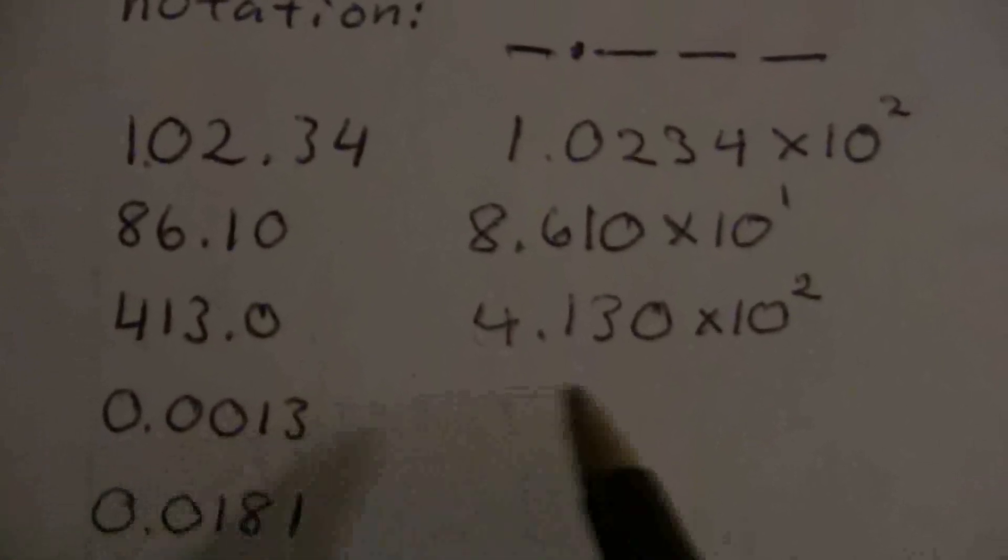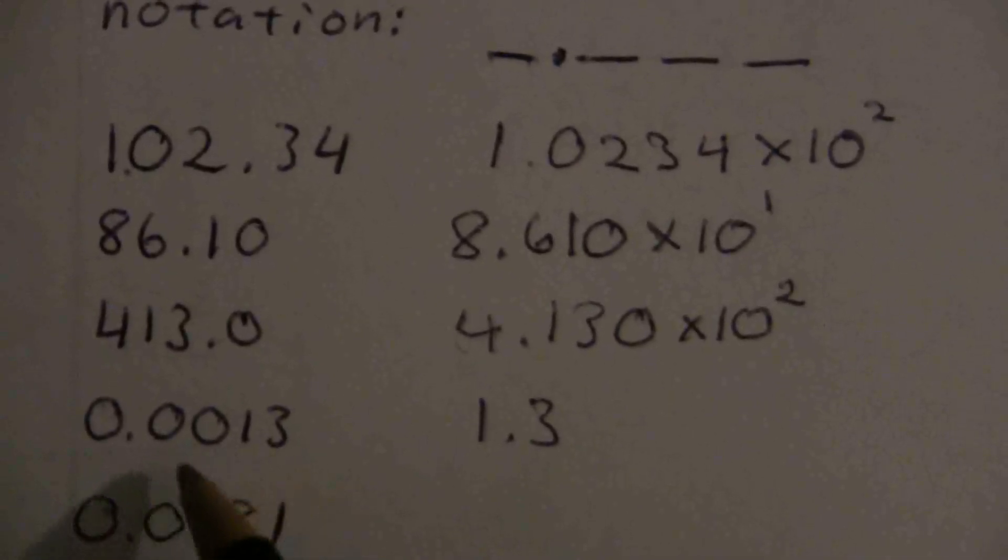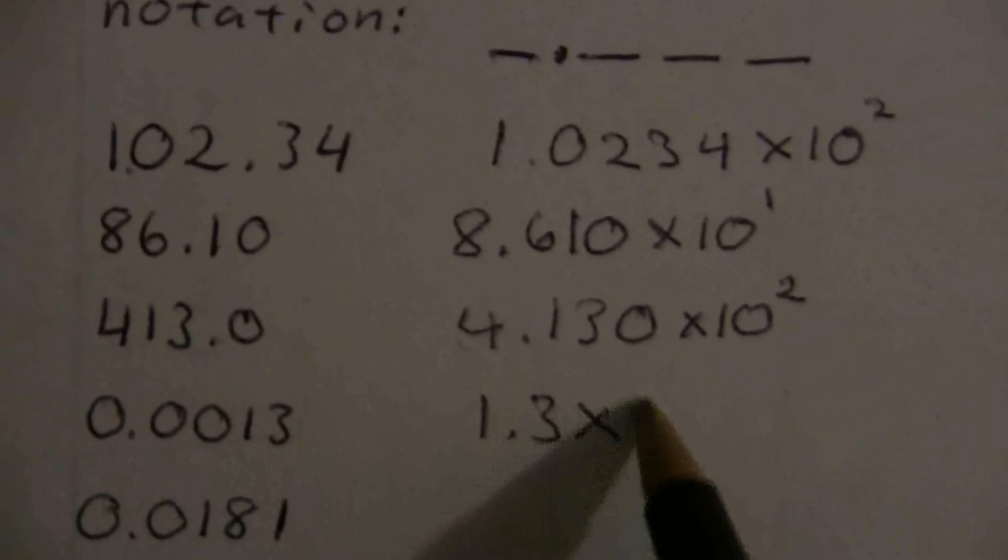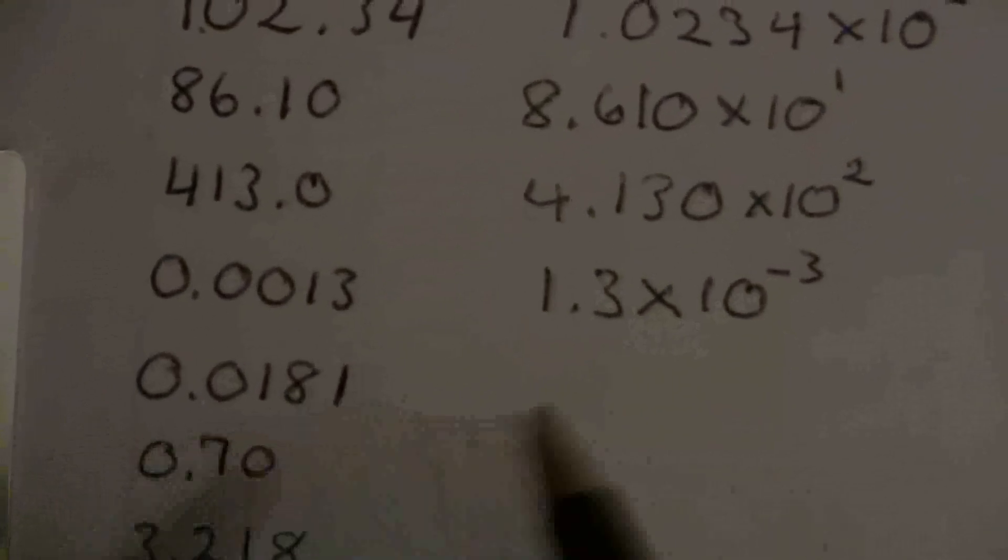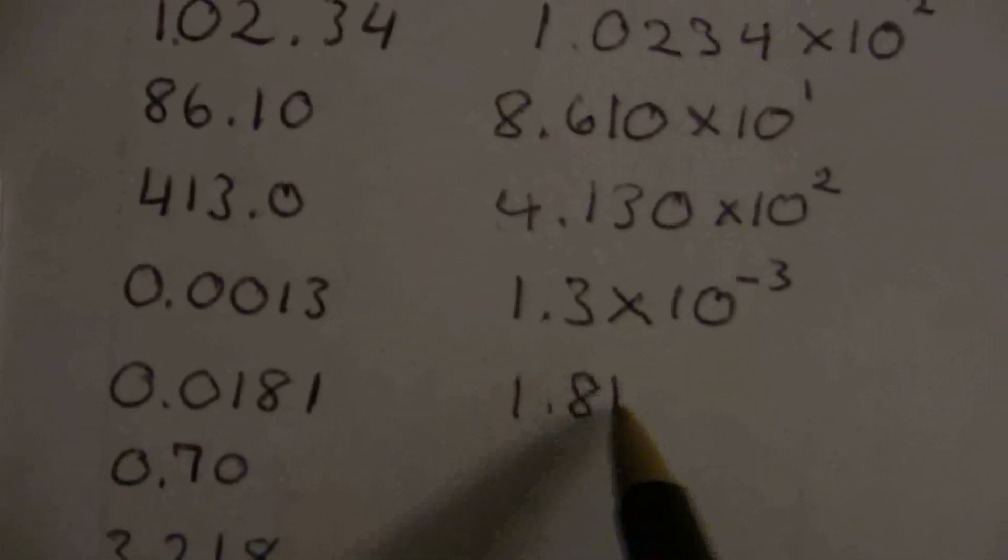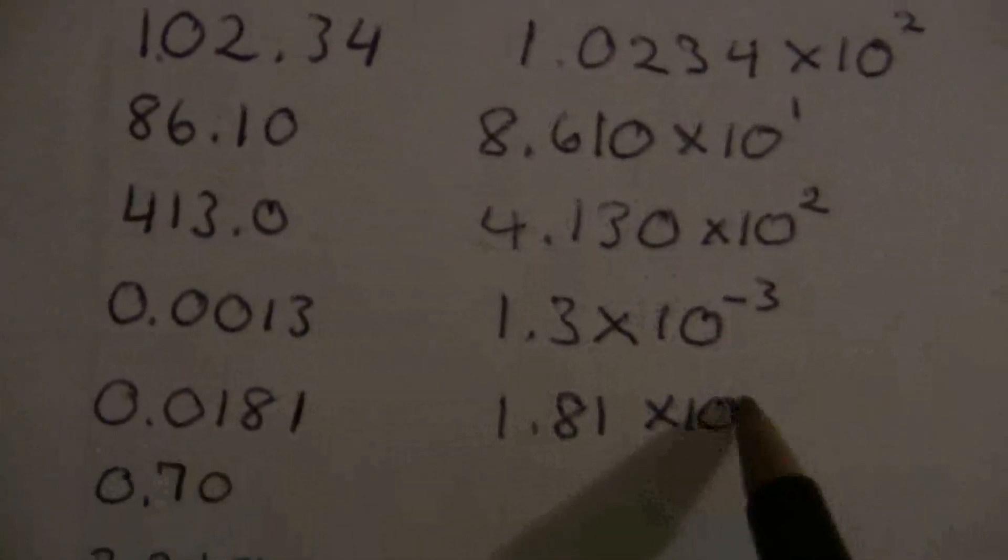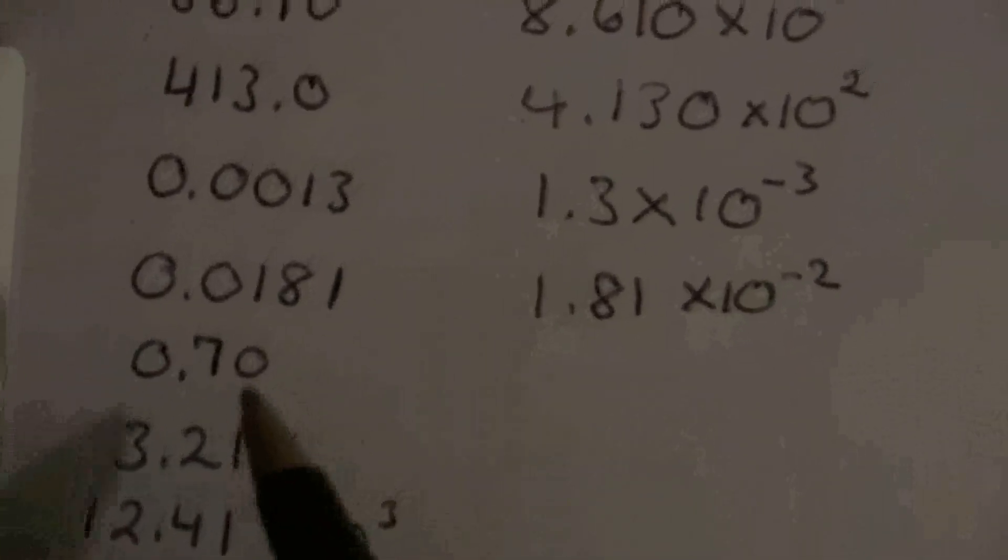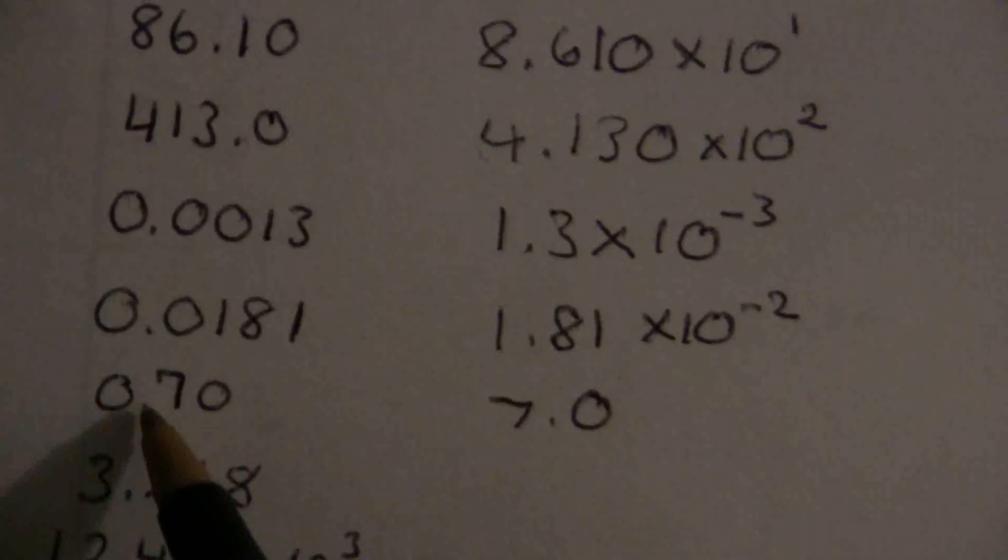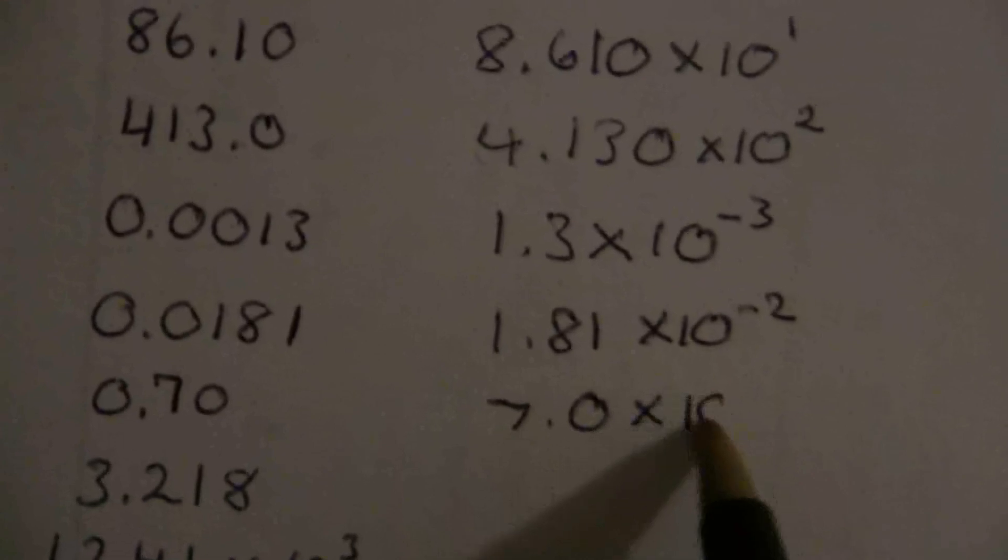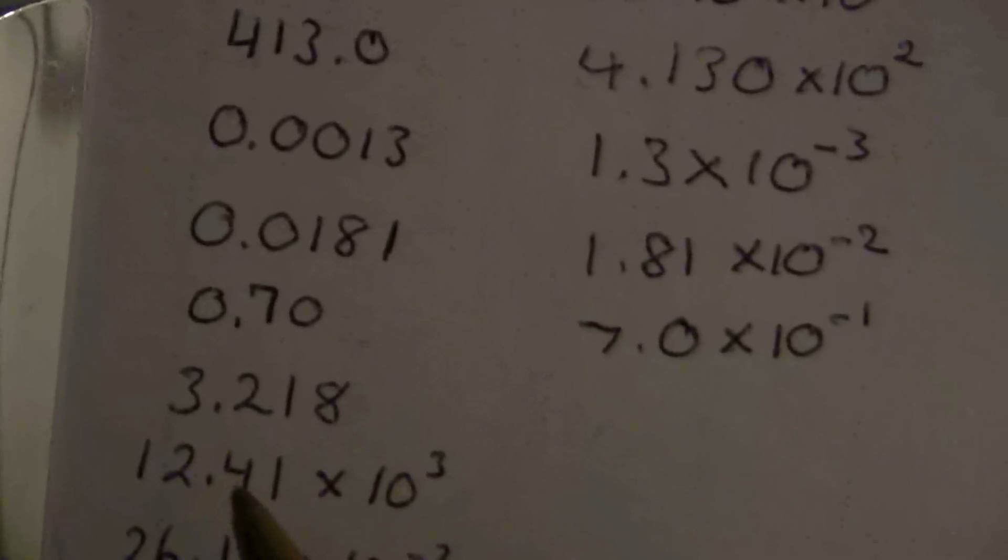Now this one, we're going the other direction. So we're going to put 1.3, and then we want to go three places in the opposite direction, so that's a negative three. Here, 1.81 times ten to the negative two.